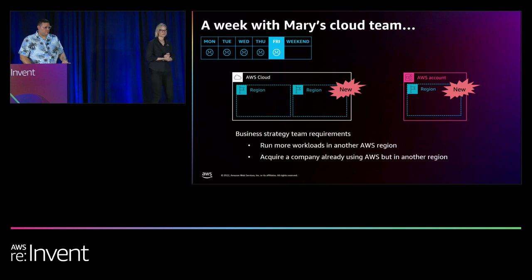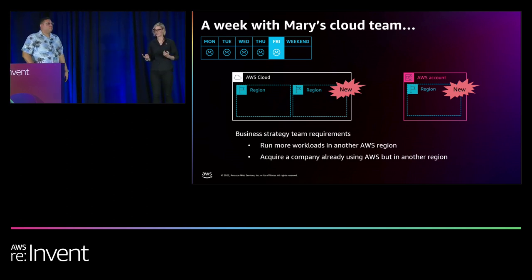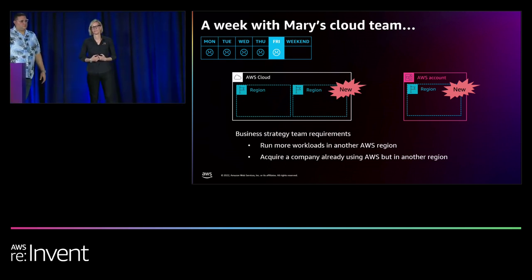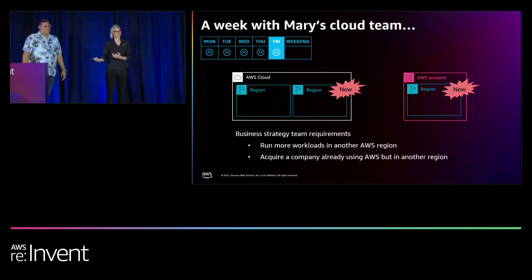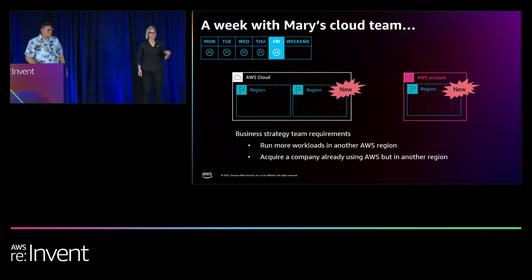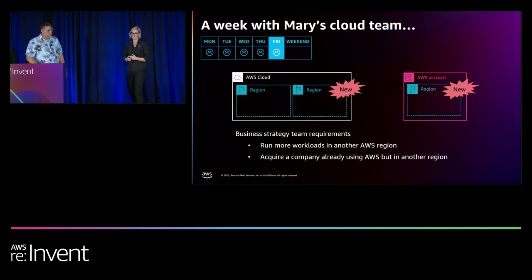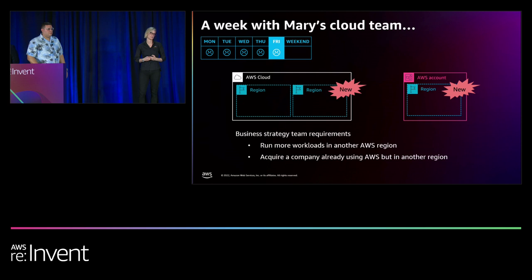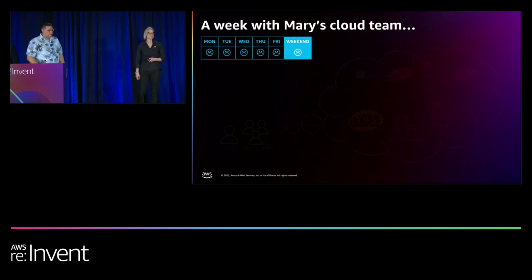On Friday, new requests come in — a team wants to run workloads for an international subsidiary in another region, meaning Mary has to enable a new region and extend governance there. During that meeting, the same lead also mentions they're close to closing an acquisition on another company that already uses AWS, so they need to bring all of their workloads under their governance as well. Mary is realizing more automation would give her greater visibility and control. She knows her team can get the work done and has the right skills, but with all the manual processes, she's not confident enough to say 'no problem.' Instead she says she'll need time to estimate — effectively making the business wait.